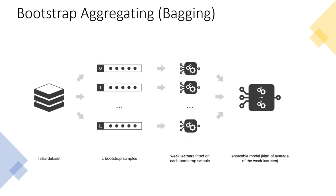The key thing to remember about bagging: we train everything in parallel, because the models are independent. From an initial dataset we create L bootstrap samples, train L independent models in parallel — whatever is trained in one model does not affect another. This independence is the fundamental difference between bagging and boosting. In bagging, everything is independent and works in parallel; the final decision combines all independent decisions.